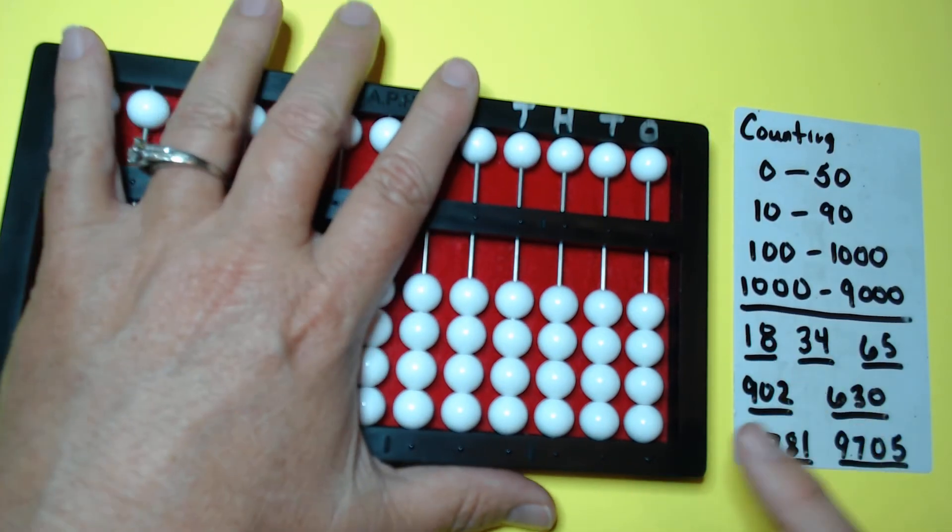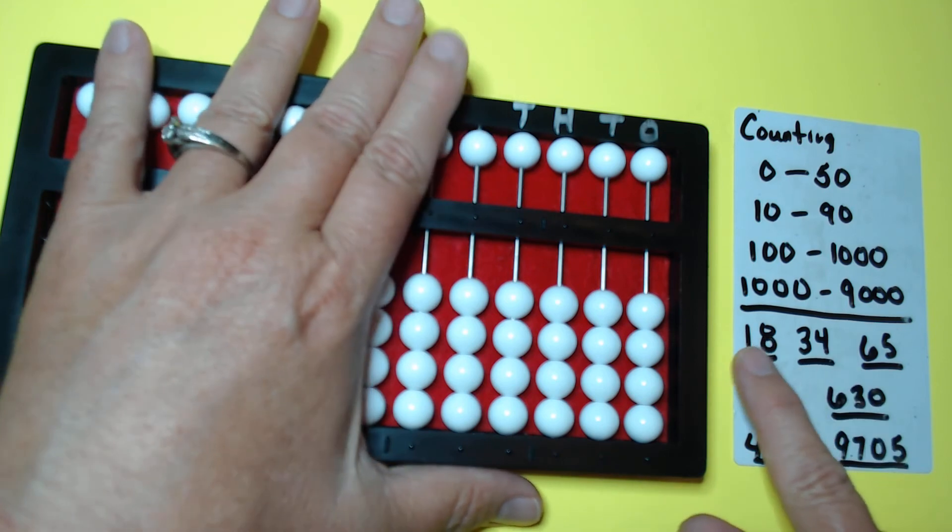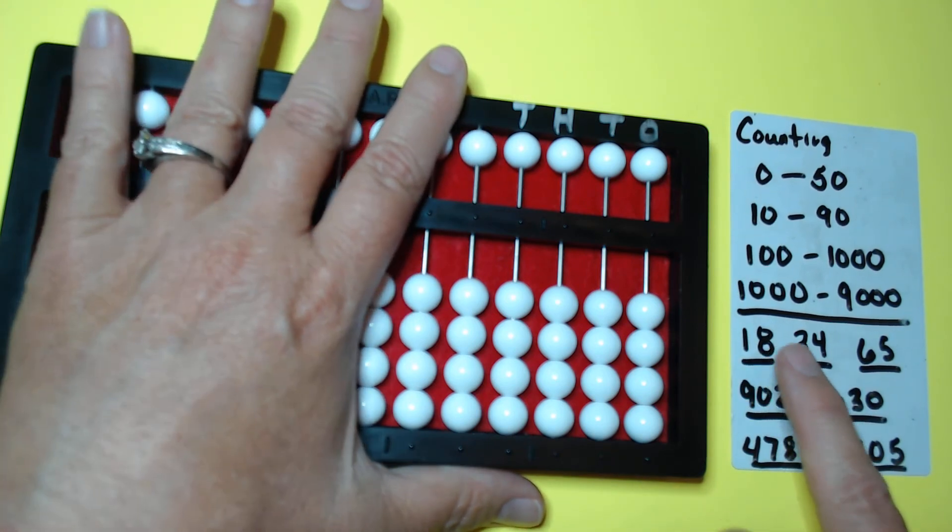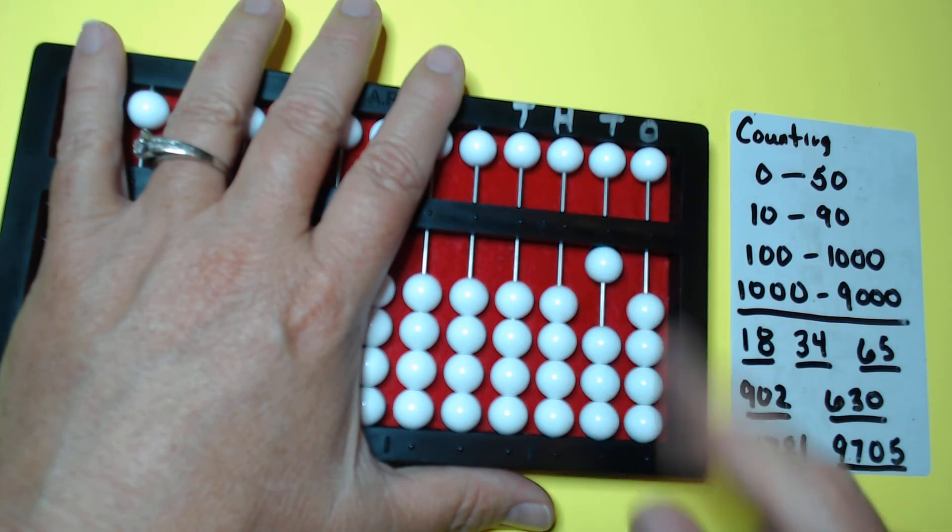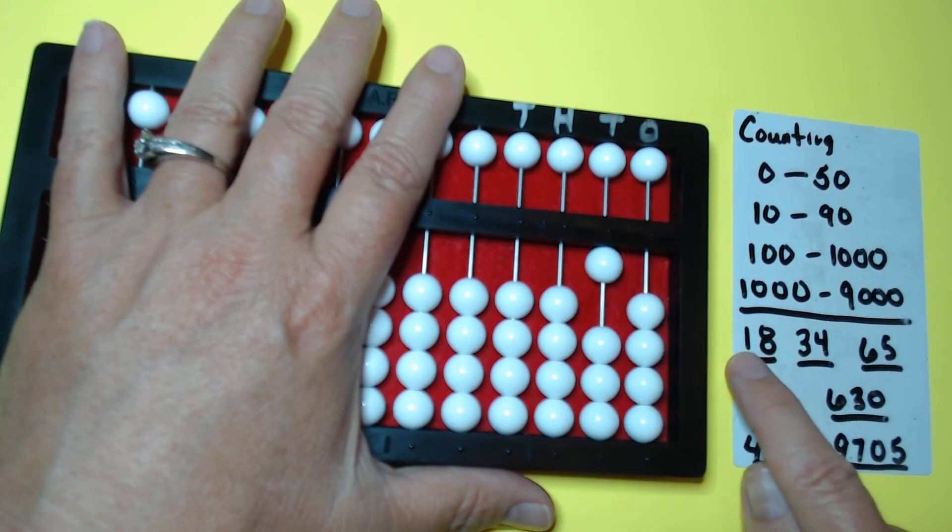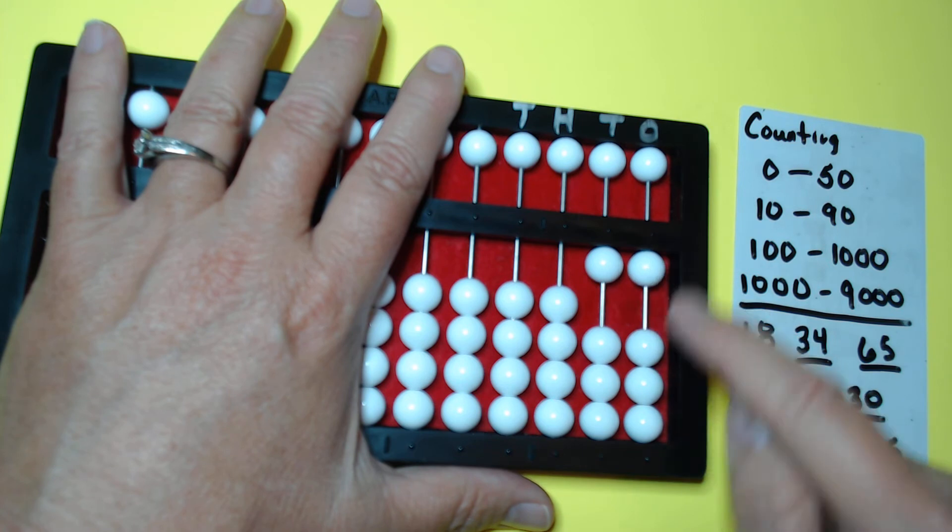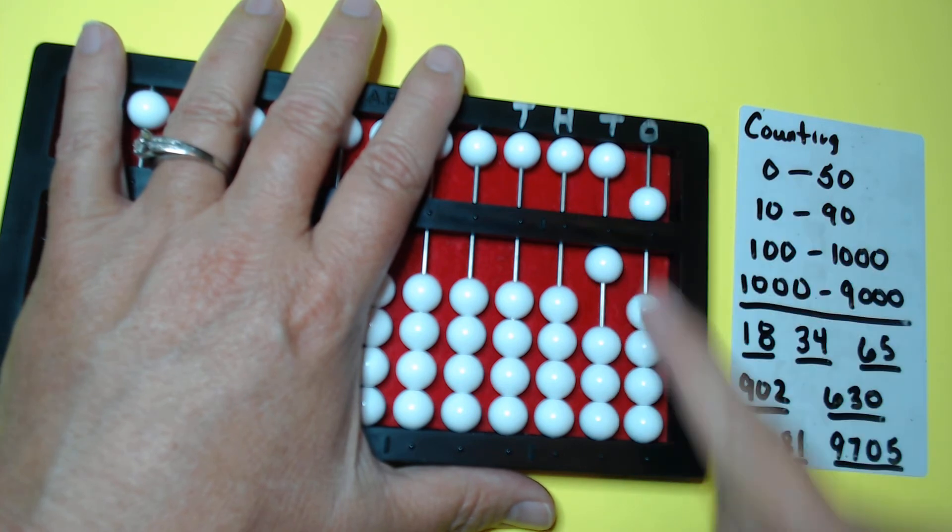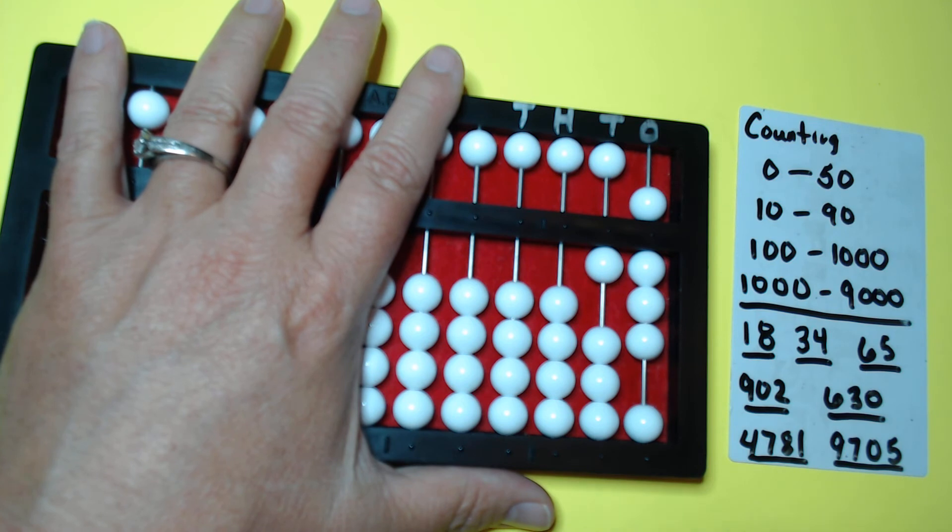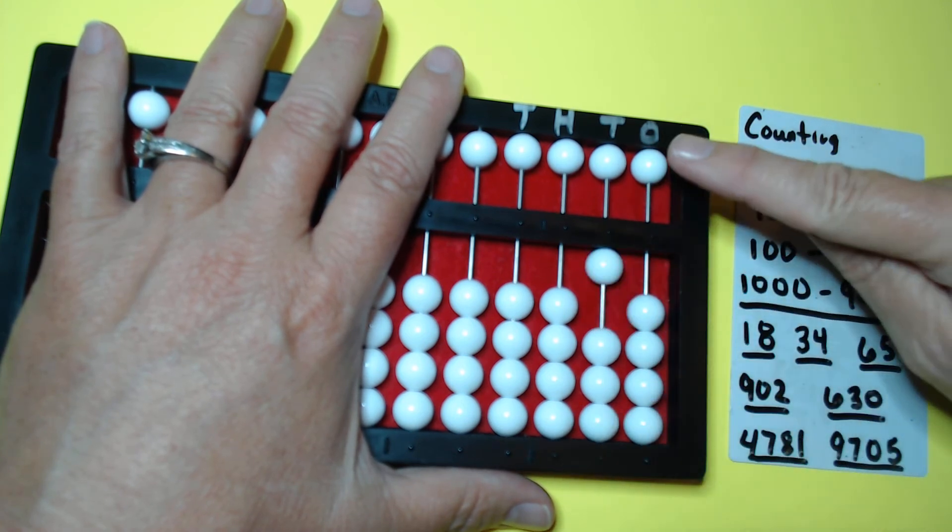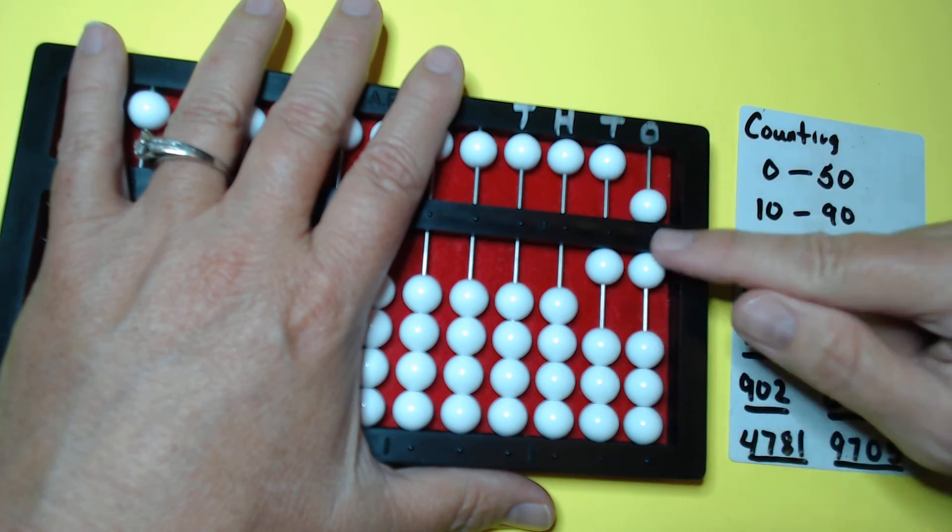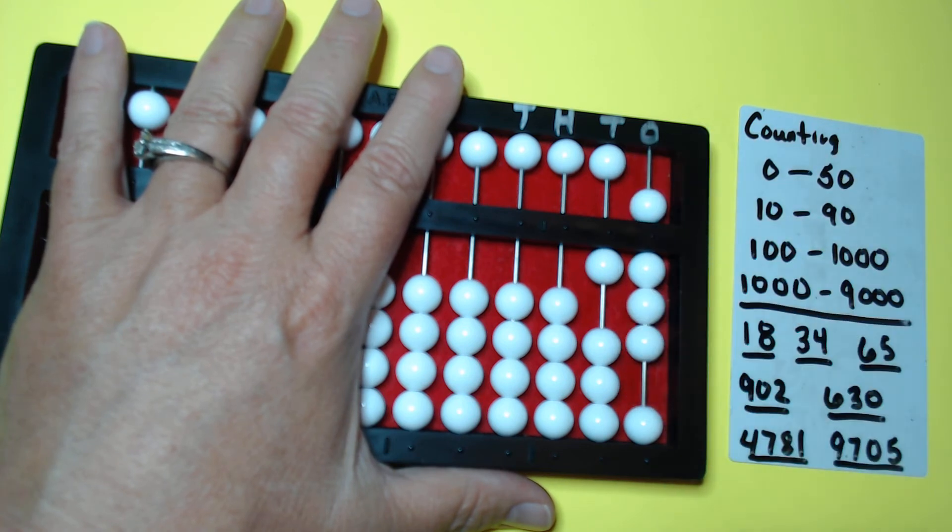So let's set eighteen. We know that that is a one in the tens column and an eight in the ones column. So the counting method, we could start here. Let's just set the ten bead for the one. And then the eight. One, two, three, four. Boom. Five, six, seven, eight. I could do this quote shortcut instead and just set eighteen. That's a one. I could start with my five, six, seven, eight. And we get eighteen.